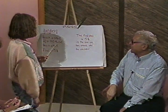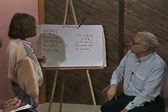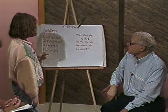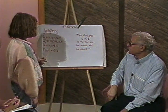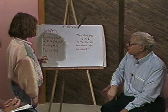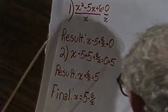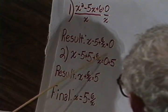We already know the answers to this. She's done it seven different ways — seven, the magic number. After we divide the equation by x, this is what we end up with: x minus 5 plus 6 over x equals 0.